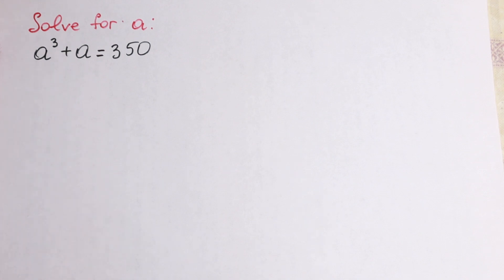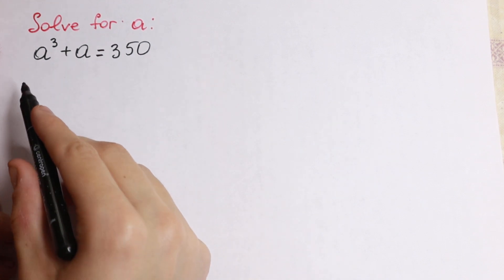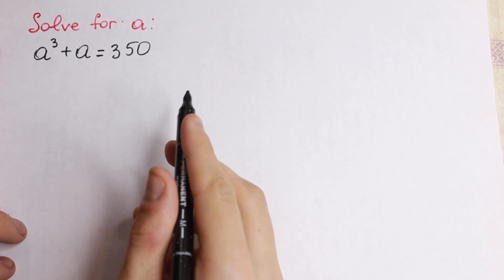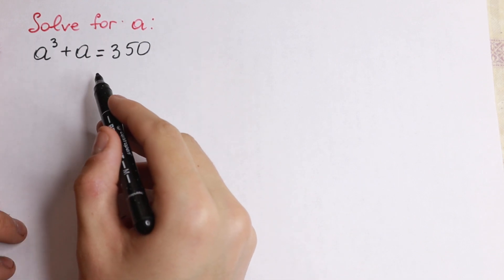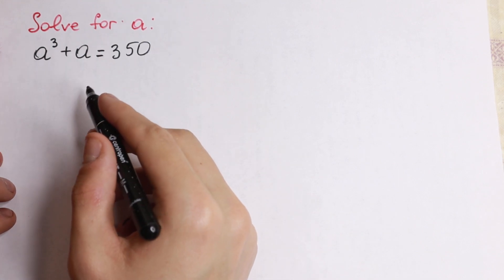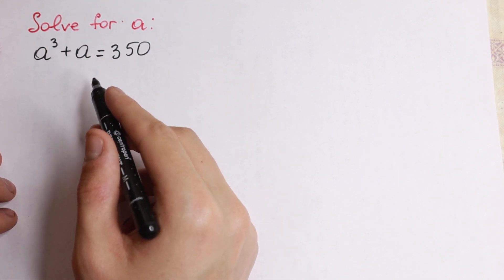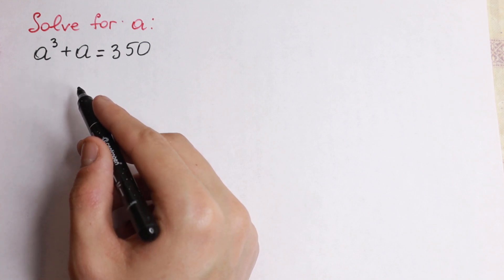Hello everyone, welcome back to high mathematics. In this video we can solve this interesting algebra problem. We have a cube plus a equal to 350, and we need to solve it — we need to find our a.